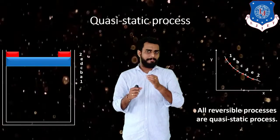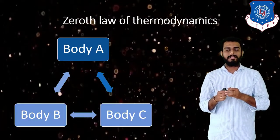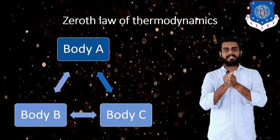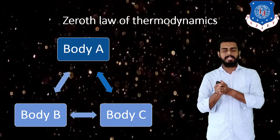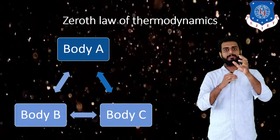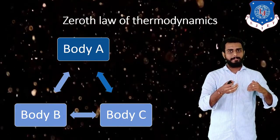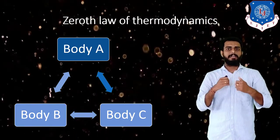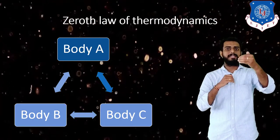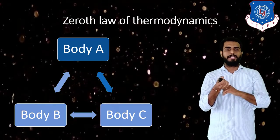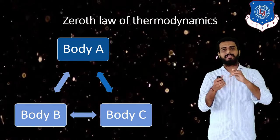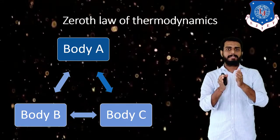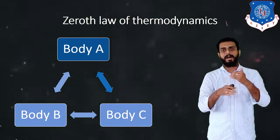Next is the zeroth law of thermodynamics. If body A is in thermal equilibrium with body B, and body B is in thermal equilibrium with body C, then body A is also in thermal equilibrium with body C. That is the zeroth law of thermodynamics, and it defines temperature.